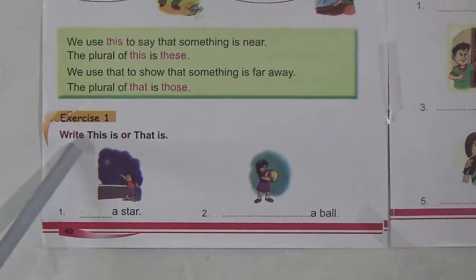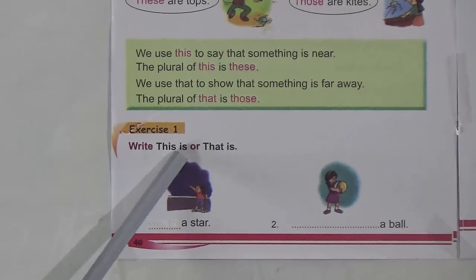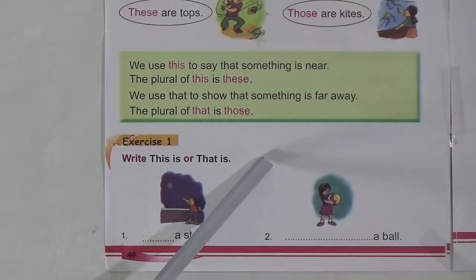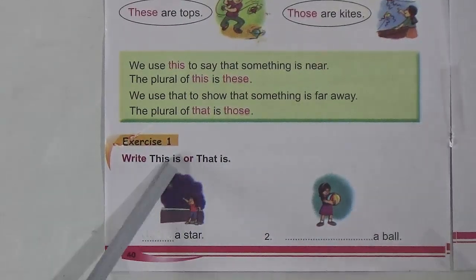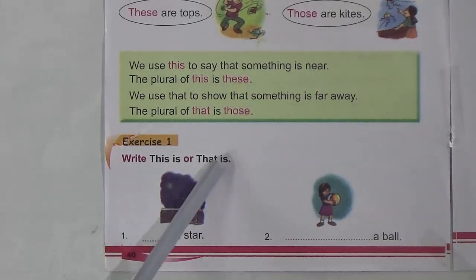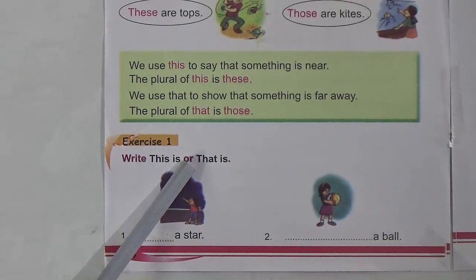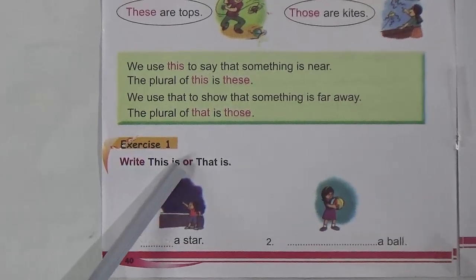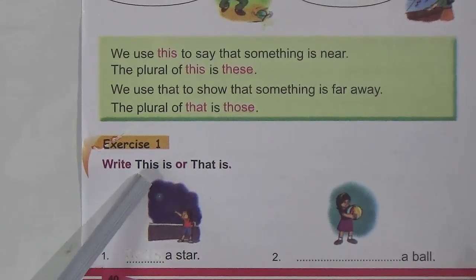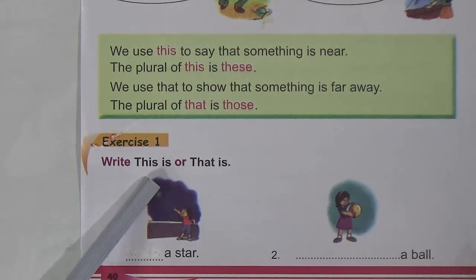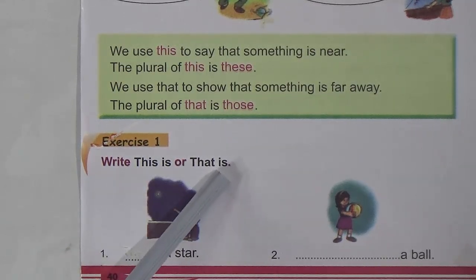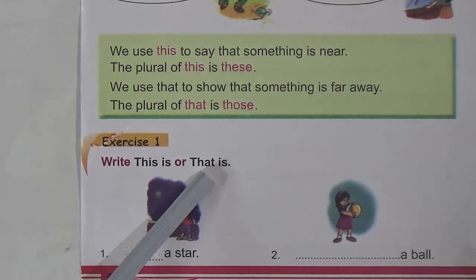Exercise number one: write 'this is' or 'that is'. We use 'this is' and 'that is' to indicate one object, or one person, animal, or bird. We use 'this is' when the object, thing, or person is near us, and we use 'that is' when the object, thing, or person is far away from us.